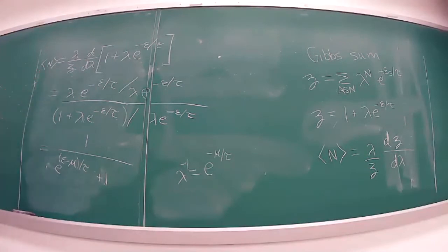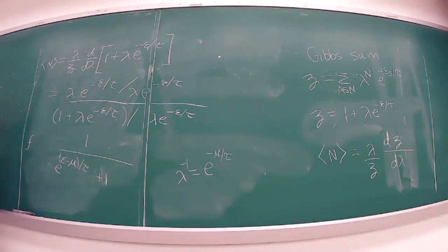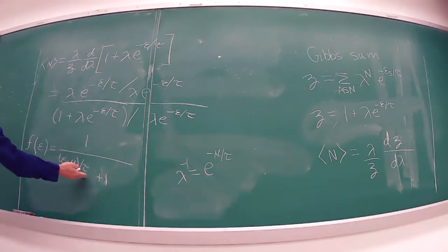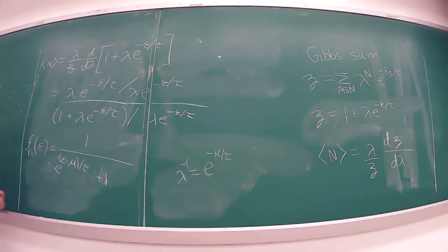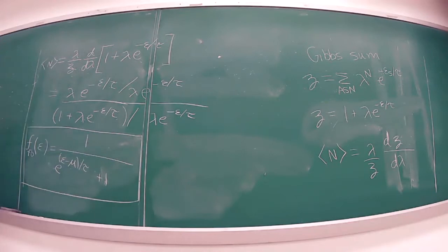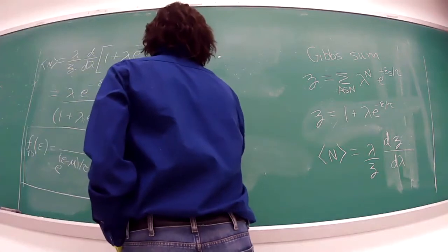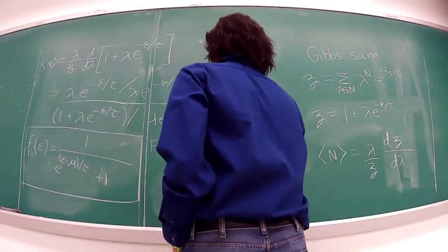This is the expectation value of the number of particles. When it represents this distribution, it's usually called f — f as a function of energy — and you have a different curve for each chemical potential and temperature. You can label it f_FD for Fermi-Dirac. This is the Fermi-Dirac distribution function.